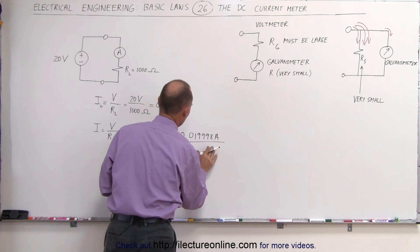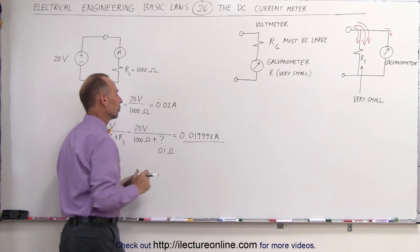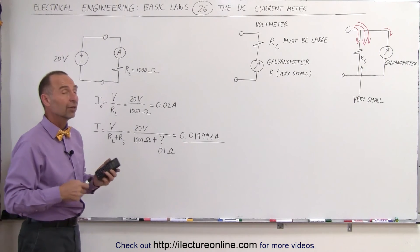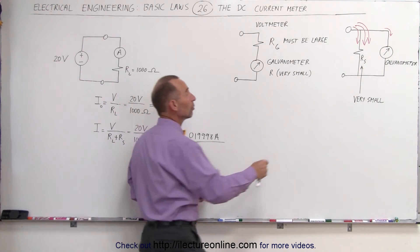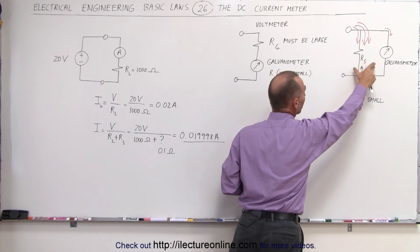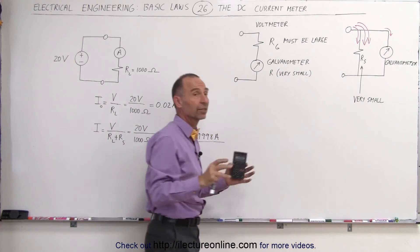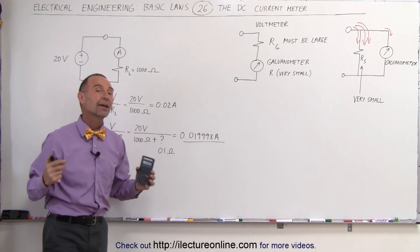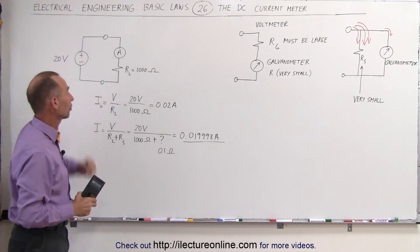You can see that the current through the circuit is virtually identical to the current that was there before the current meter was attached. And so you can see that as long as you keep the shunt resistor very, very small, so that all the current going through it, or most of the current going through the meter will go through the shunt resistor to protect the galvanometer, and it's small enough so that it doesn't affect the circuit, then you have a current meter that you can use in a circuit like this.